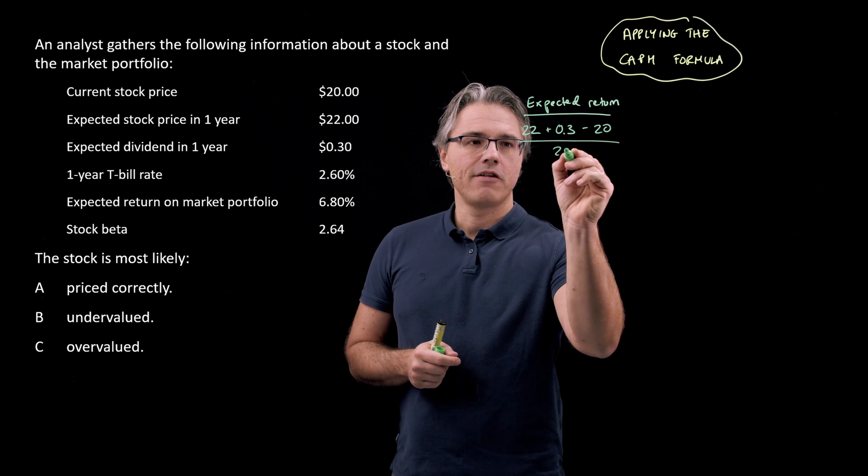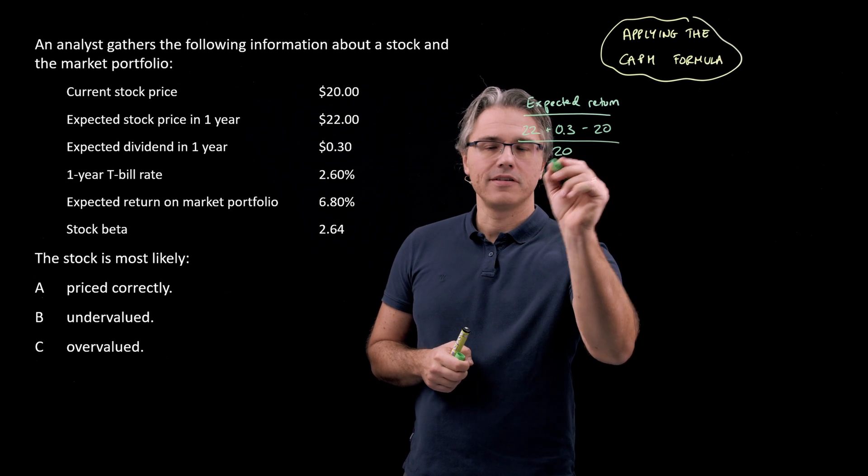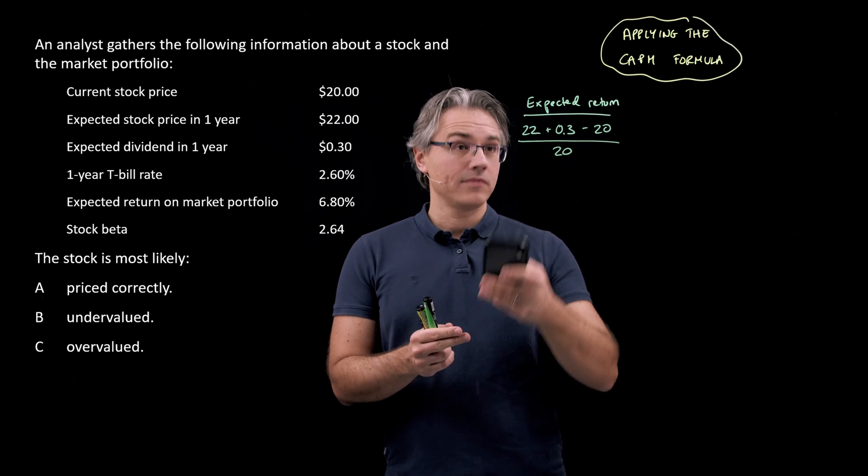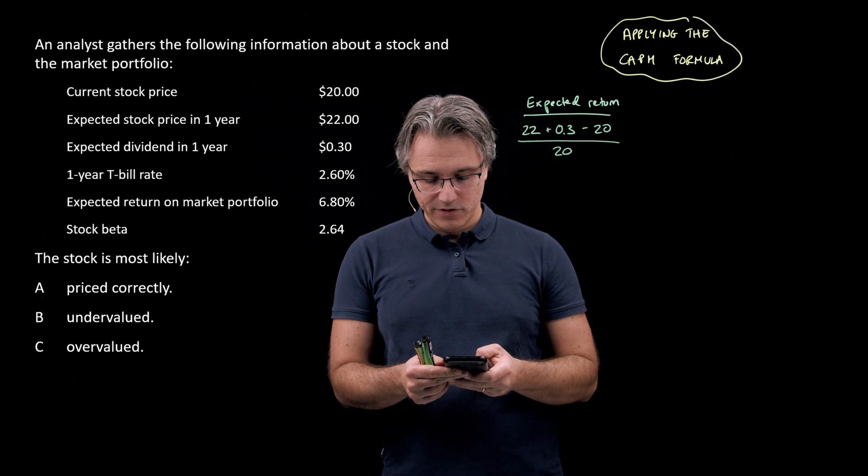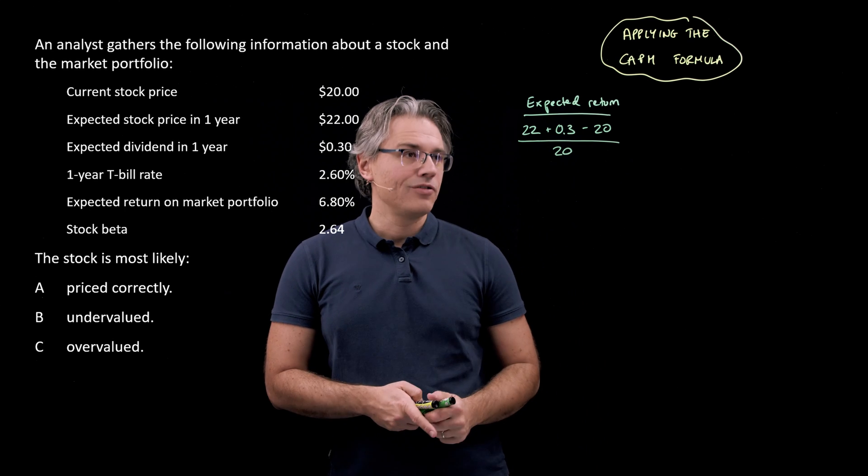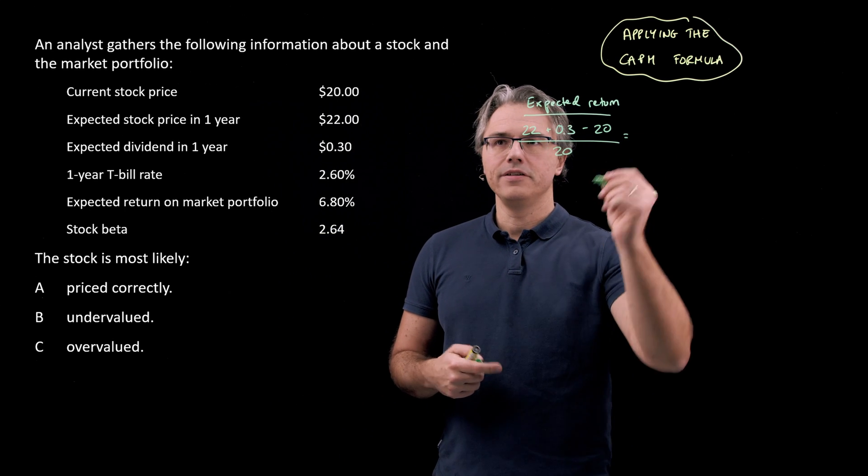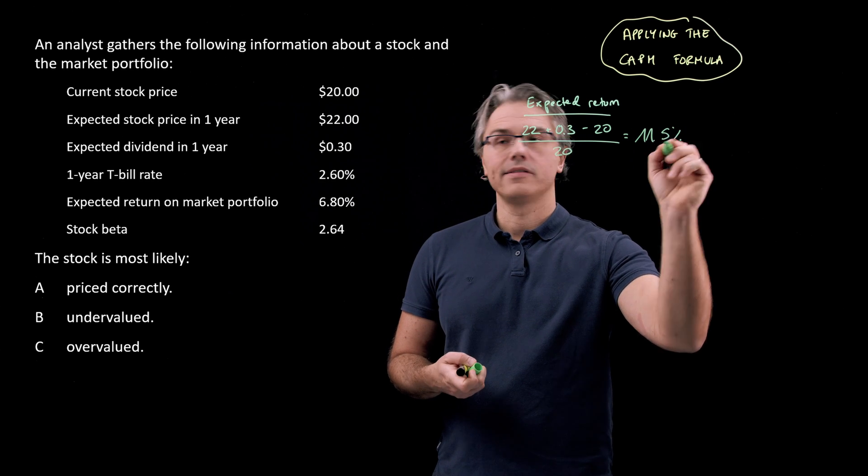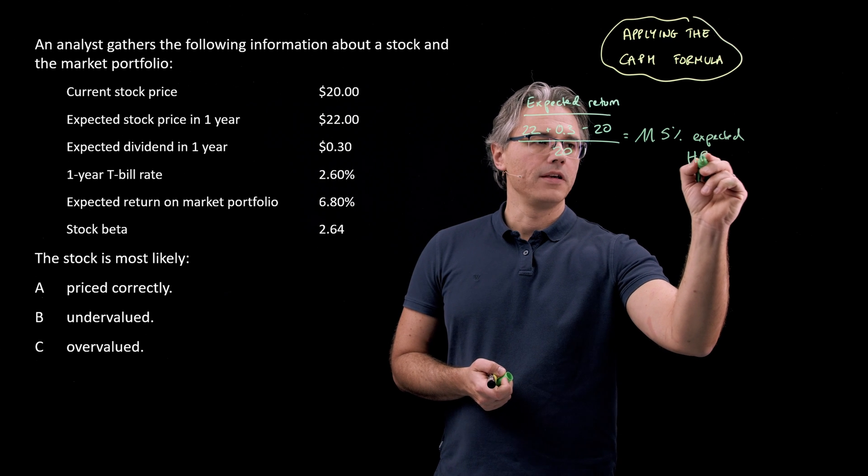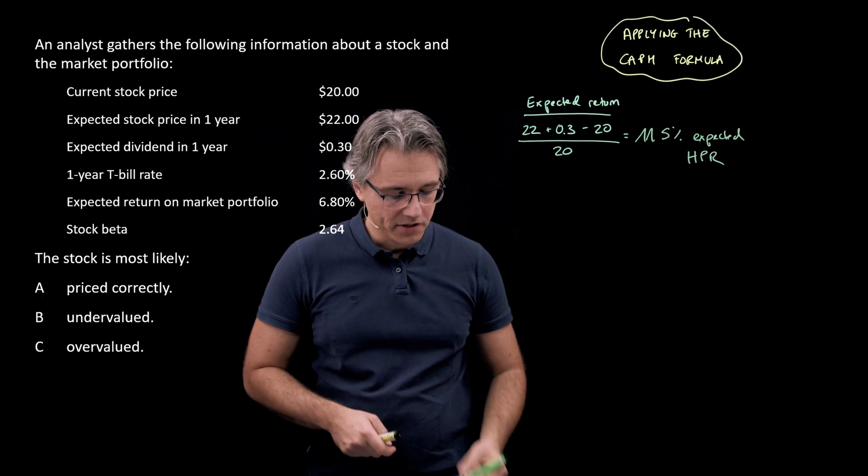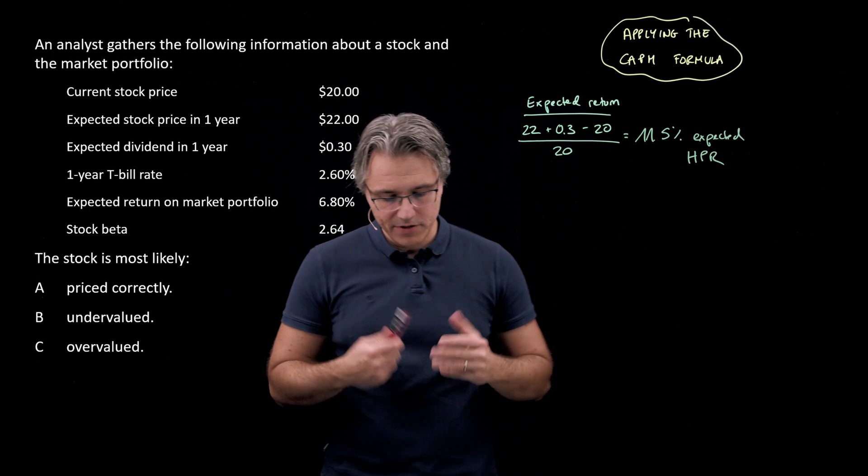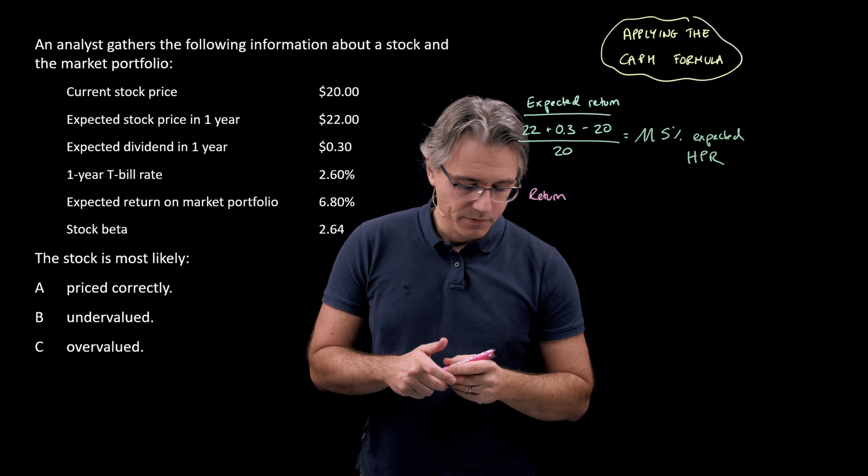And I'm going to divide this by the current price of 20 to turn it into a true yield or return measure. So what I've got at the top here is 2.3. I'm dividing this by 20, and I can see that this stock is expected to yield a return of 11.5%. So that's the expected holding period return. The holding period is one year here. And I'm going to compare this with the return required.